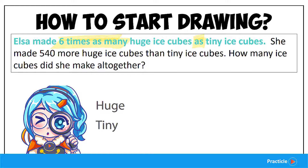Otherwise, it's all right. You have just learned something new and I'm sure you'll be able to spot the right words next time. So what does 'six times as many as' mean? This means that if one of the objects has one unit, the other object must have six times of that amount.